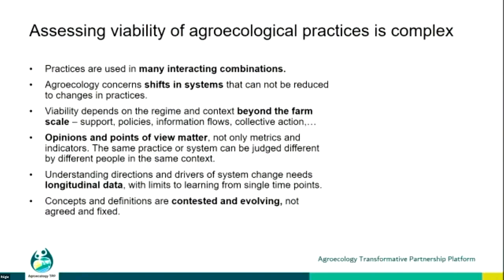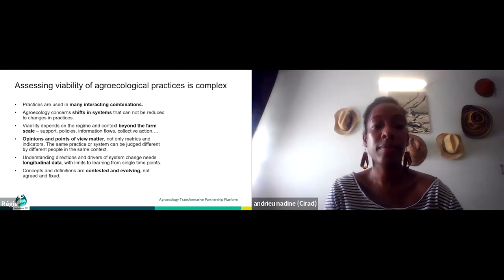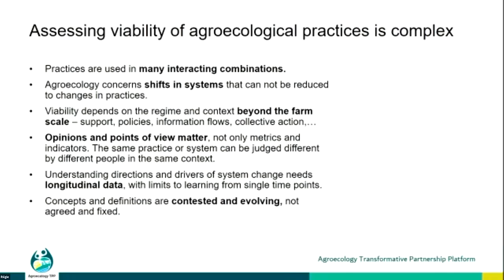There is a key message about methods: assessing the viability of agroecological practices is certainly complex. Practices are not used alone — they are used in diverse combinations and interact with each other. Agroecology is about shifting systems, which cannot be reduced only to changes in farm-level practices. Viability depends on the regime and context beyond the farm — to say whether a practice or set of practices is viable, you must consider where it is situated, what supports it, and what blocks it. Viability is not a context-free property of a practice.